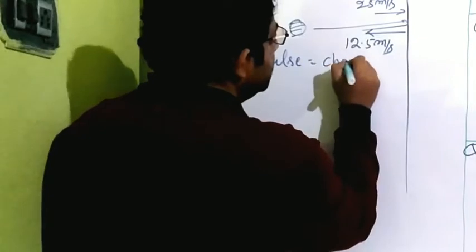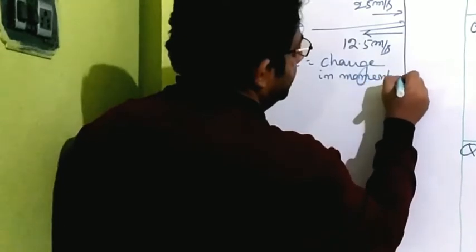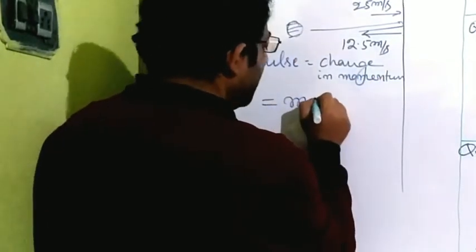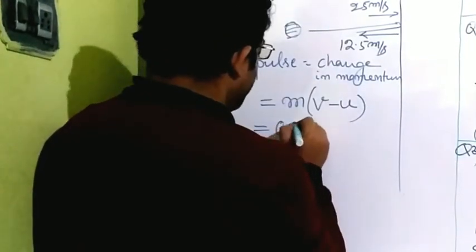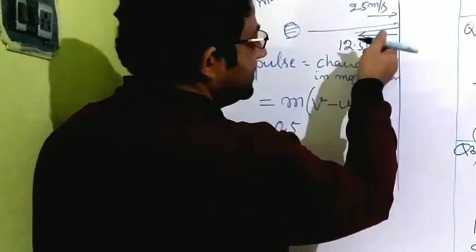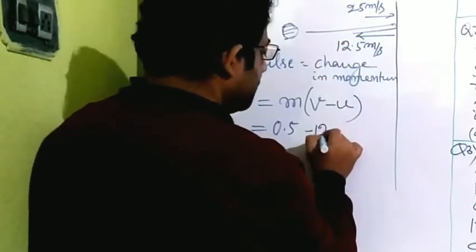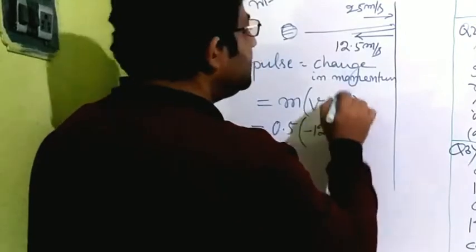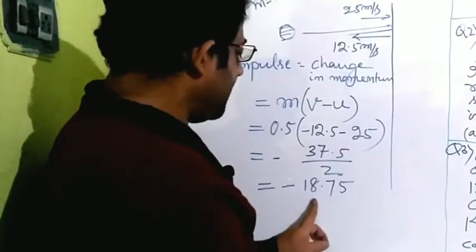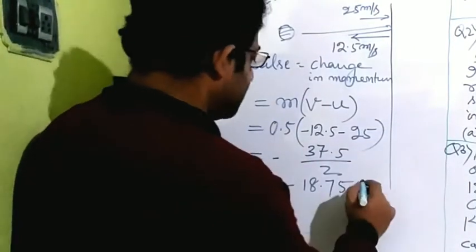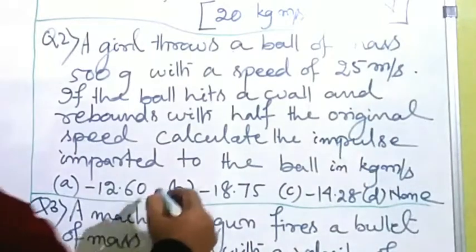Impulse equals change in momentum equals M times (final velocity minus initial velocity). Mass is 0.5 kg. Taking the initial direction of motion as positive, the initial velocity is plus 25 m/s and the final velocity is minus 12.5 m/s (since it rebounds). So impulse equals 0.5 multiplied by (minus 12.5 minus 25) equals 0.5 times minus 37.5 equals minus 18.75 kg·m/s. The correct answer is minus 18.75 kg·m/s.